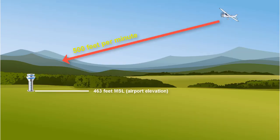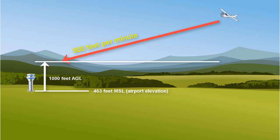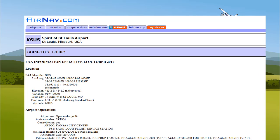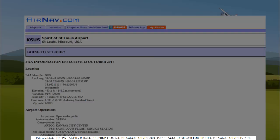Next you want to determine what the traffic pattern altitude is around the airport. Most pattern altitudes are about 1000 feet AGL, or above ground level, but this is not always the case. You can look up the information for the airport you are interested in from different sources, but we will use the information from airnav.com. Notice under the airport operations section there is information for the pattern altitude.